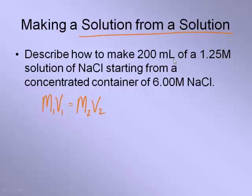It says describe how to make 200 milliliters of a 1.25 molar solution. So my molarity here will be 1.25. My volume, of course it's in liters, is 0.20. I'm starting with a 6 molar solution, so it's a pretty concentrated solution, and I don't have a V2.